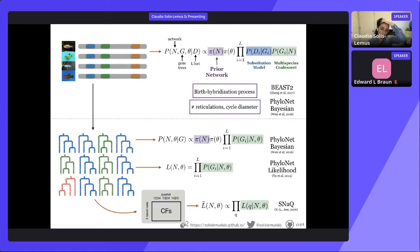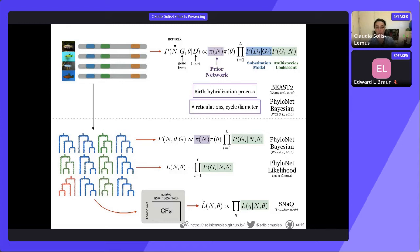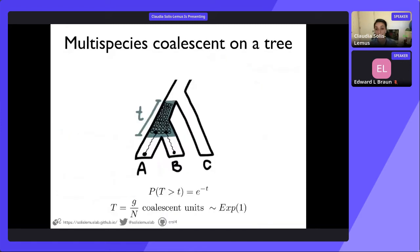Phylonet also has Bayesian and likelihood flavors for the two-step approach, both more scalable than going directly from sequences, but still not very scalable for large datasets — which is why we created SNAC. SNAC summarizes the gene trees into concordance factors to estimate the network. Of all these options, SNAC is the most scalable for big datasets, and all of these methods build on the multispecies coalescent model.